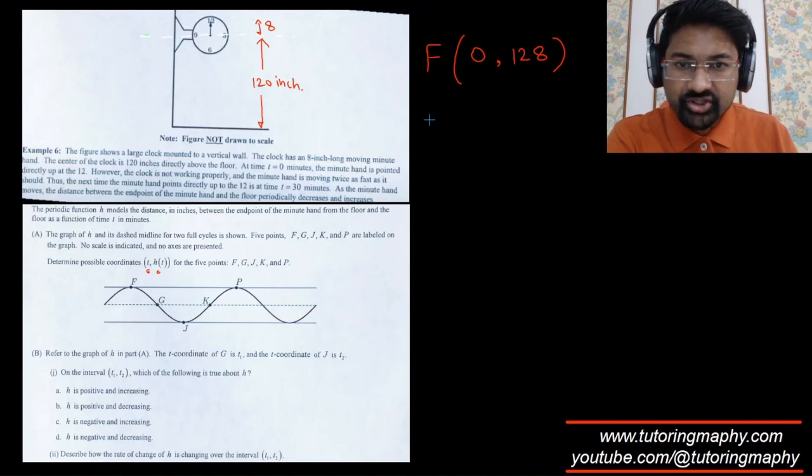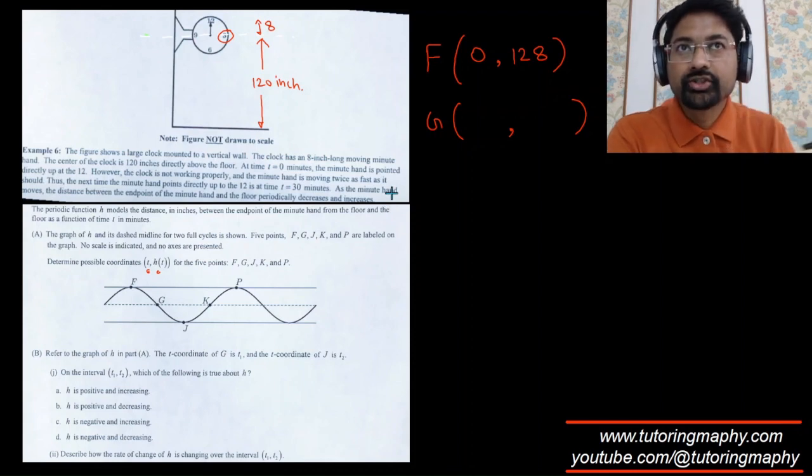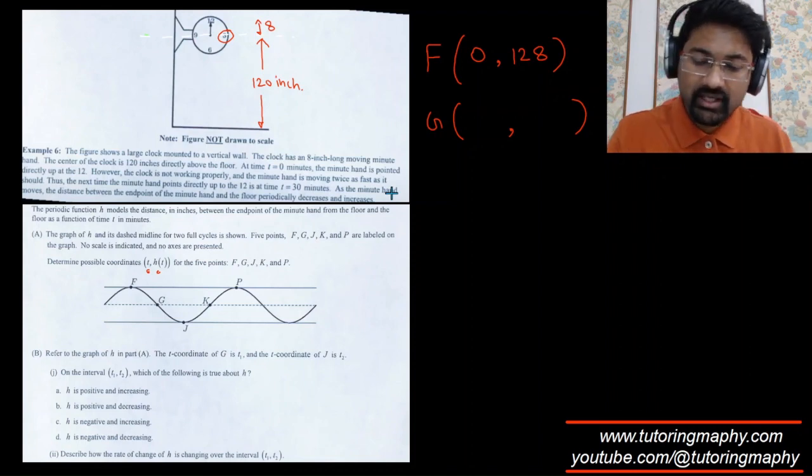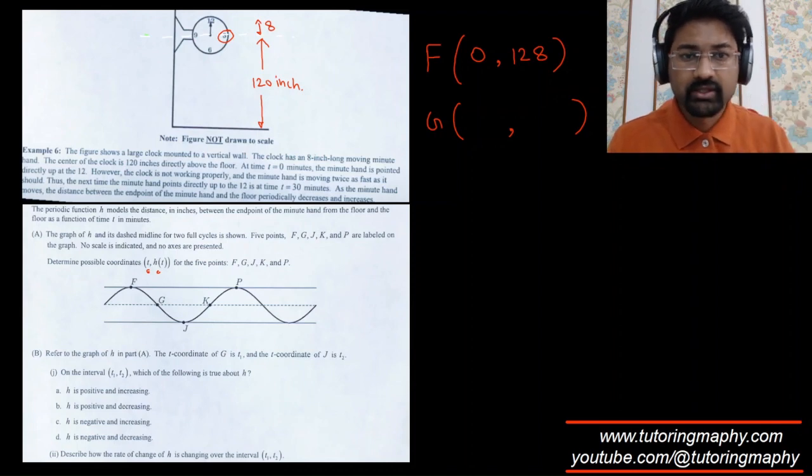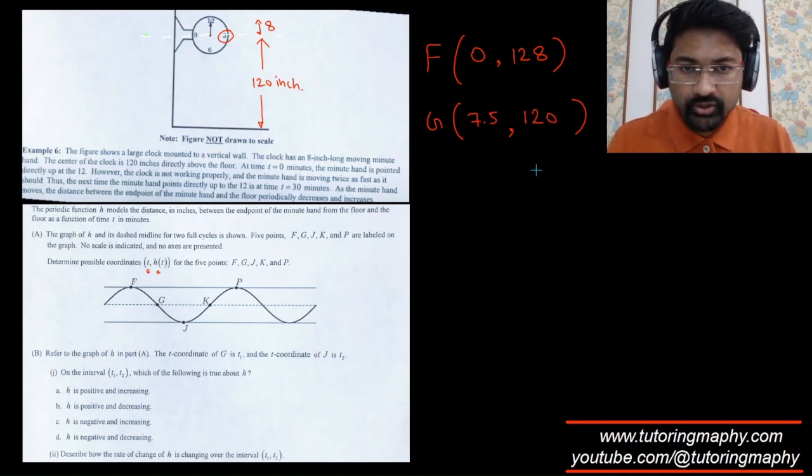G is the point where it is at the midline when it reaches 3. Generally it would have been 15 minutes, but the clock is moving twice as fast, so it'll take half the time, which is 7.5 minutes. The height is just 120 because there is no additional height offered by the minute hand. So it's 7.5 comma 120.